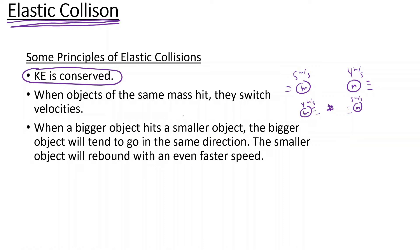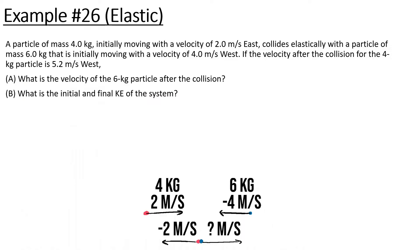Another case is when a bigger object hits a small object. The bigger object will tend to continue in the same direction it was moving, though that's not always the case. The small object will rebound with an even faster speed. That's what usually happens. Alright, let's move on and do some problems.